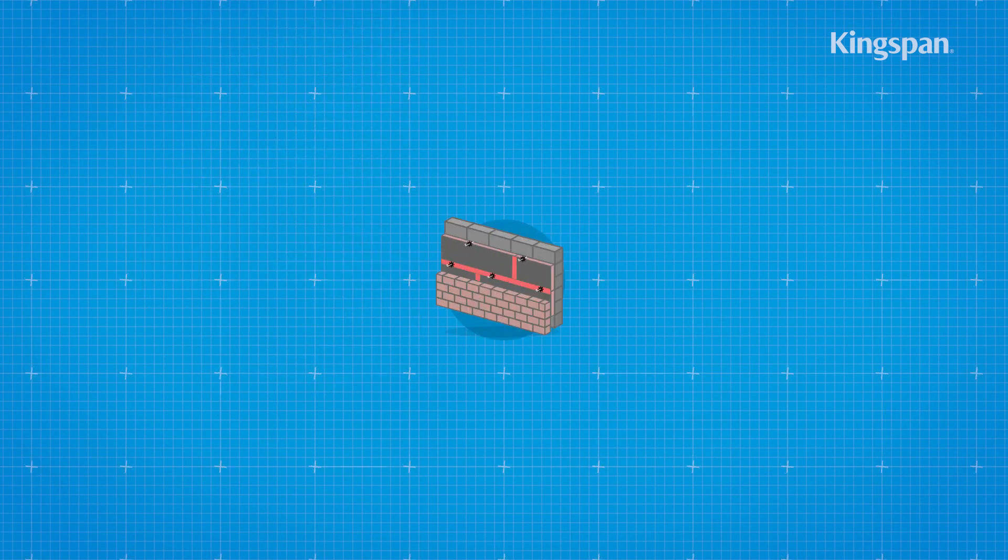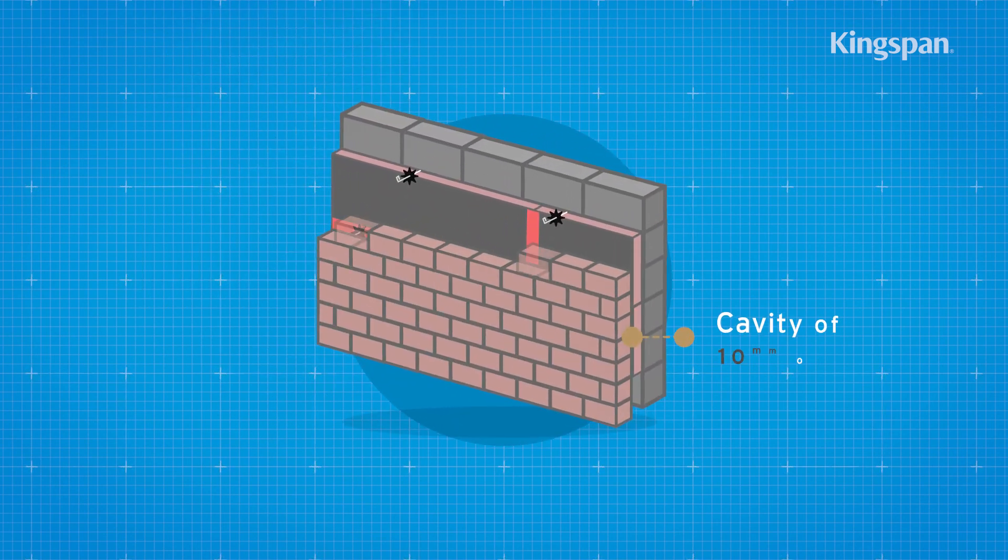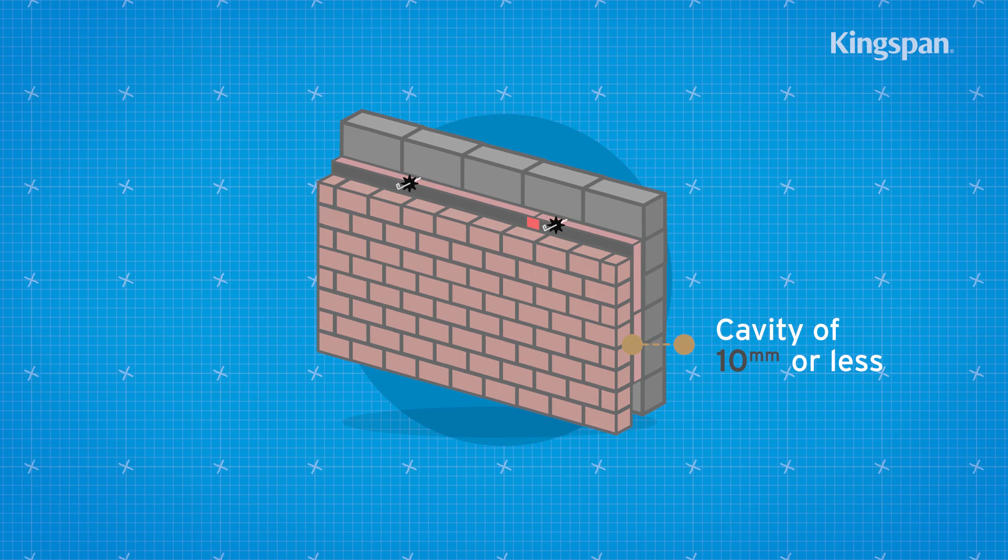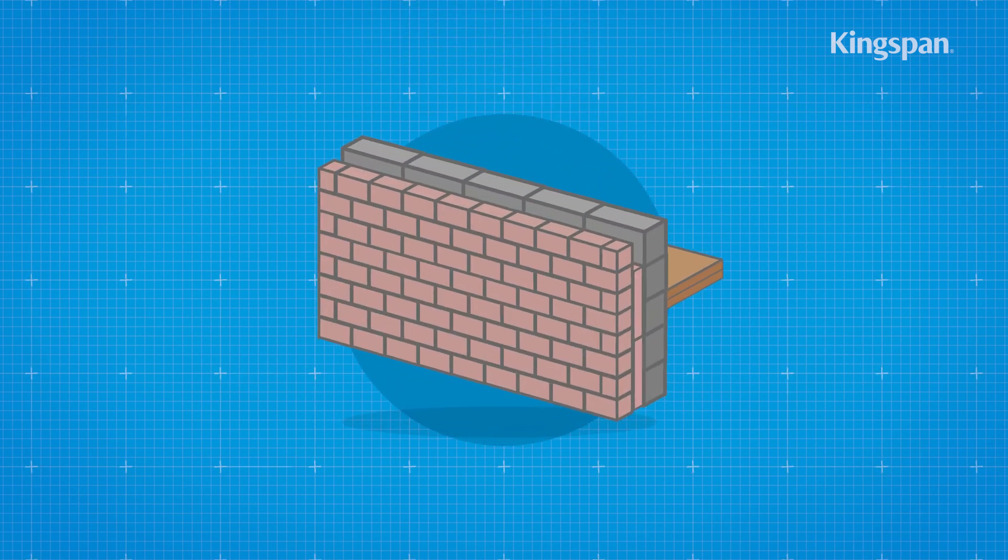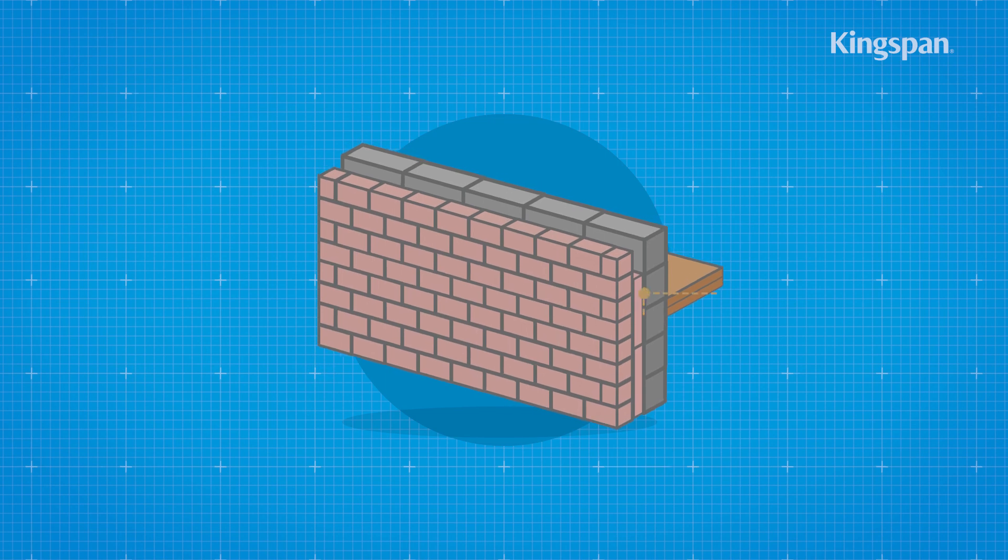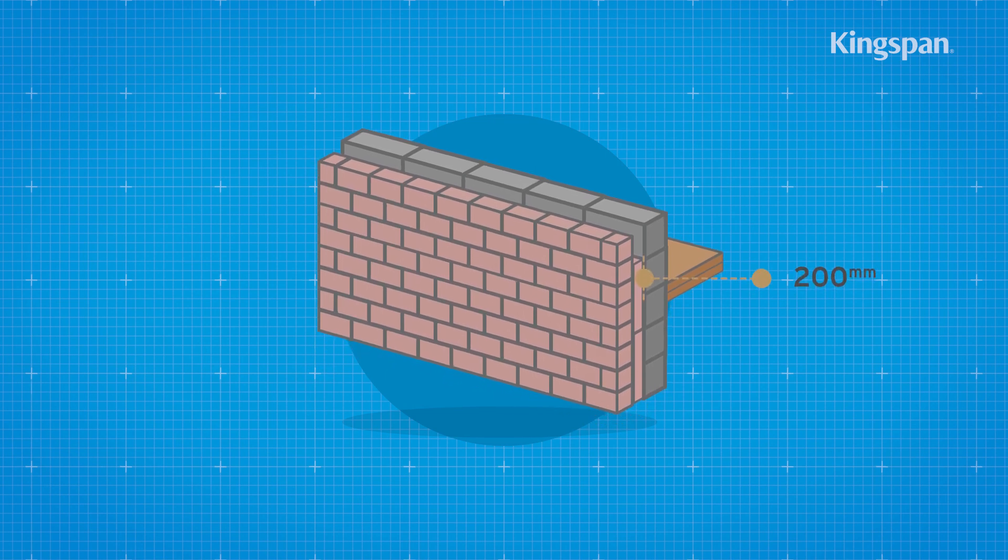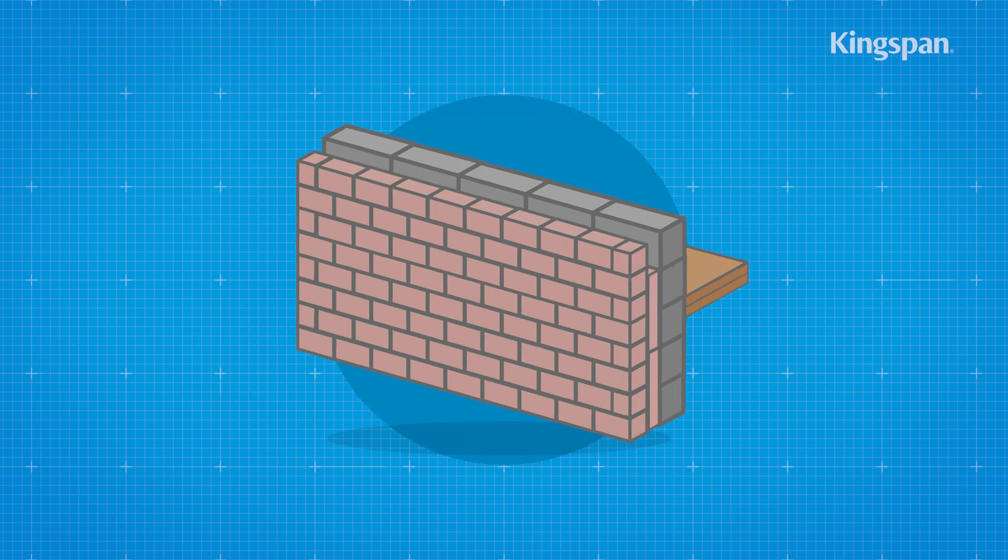Next, build the outer leaf to the level of the top of the boards and repeat the process. If finishing at a gable, insulation board should be continued 200 mm beyond the height of the top storey ceiling and a cavity tray installed above the insulation.